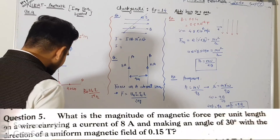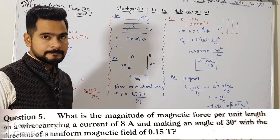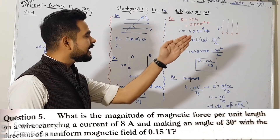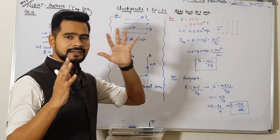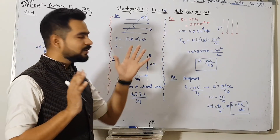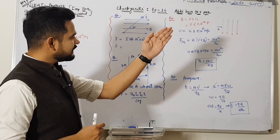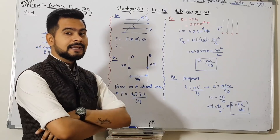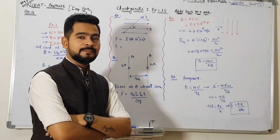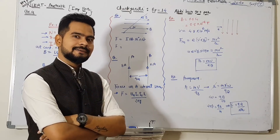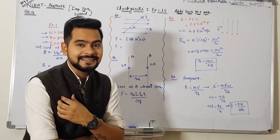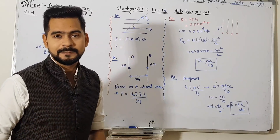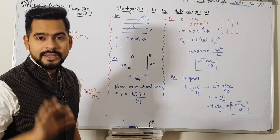Next question - screen pe dikhta hoga. Next wale question mein bolta hai ki current-carrying wire makes an angle of 30 degrees with the magnetic field lines B. So basically this is a rod and the current is passing through it, making an angle with the magnetic field. Remember the formula: F = BIL sinθ, which comes from F = IL × B. Theta value, B ki value, I ki value - dher sare chape do, khatam. Exercise mein kuch bhi nahi hai is best chapter mein.